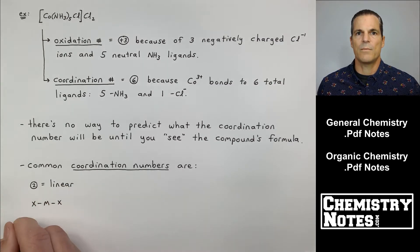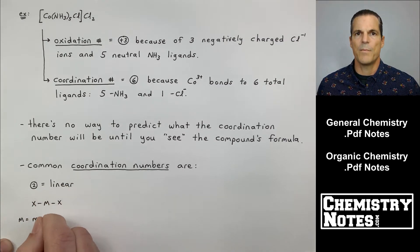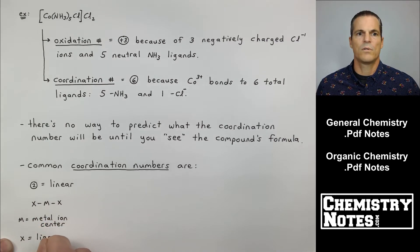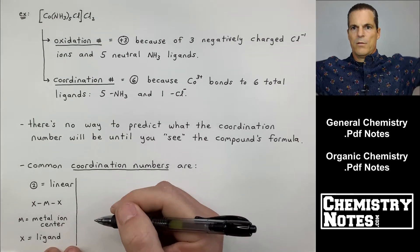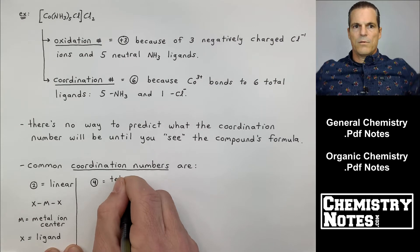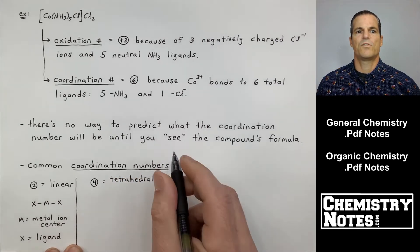Common coordination numbers. I got three common ones I'll give you here. Coordination number of two is linear. If I'm the metal, I got two connections, ligand one, ligand two. So that would be coordination number of two.